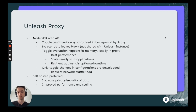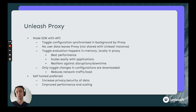The Unleash proxy acts very similarly to a server-side SDK. It's basically the Node SDK wrapped up with an API wrapper and it sits between the client SDKs and the Unleash API. Since it acts just like a server-side SDK, it syncs the toggle configurations and evaluates them in memory, meaning no user data ever leaves the proxy and none of it comes back to the Unleash instance. It scales with your application and is built to be scaled horizontally, and it's resilient against downtimes in the same way that server-side SDKs are.